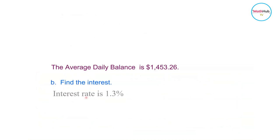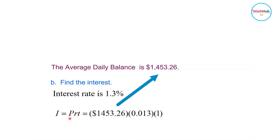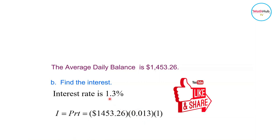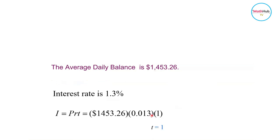Now we calculate the interest for that month. Using the simple interest formula I = PRT, the principal is the average daily balance of $1,453.26, the rate R is 0.013 (1.3%), and T is 1 month. Multiplying these gives interest of approximately $18.89.